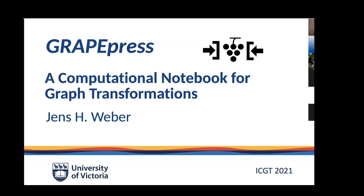Welcome to the talk of Jens Weber. He will talk about GrapePress, a computational notebook for graph transformation. This is the experimentation part of the session on probabilistic system experimentation — the tools paper. It's about a computational notebook type tool for graph transformations.